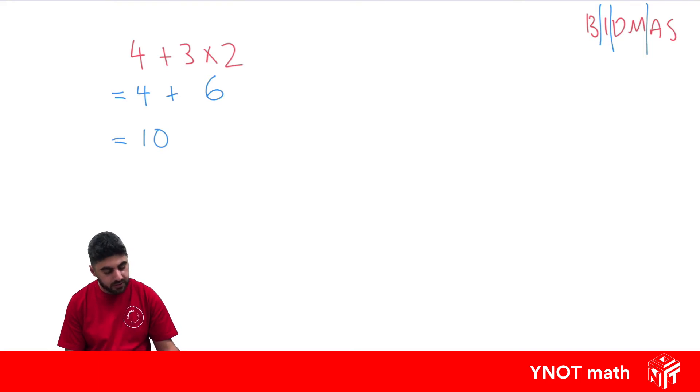And you'll note that if you did the 3 plus 2 first, that would have been 7, and times it by 2 would have been 14, and we wouldn't have got the same answer.